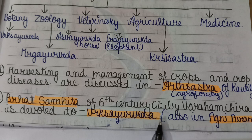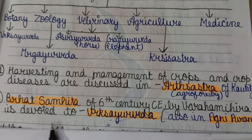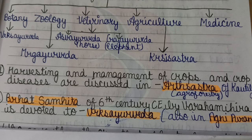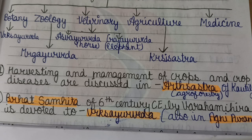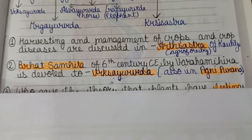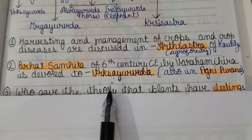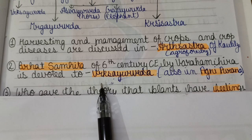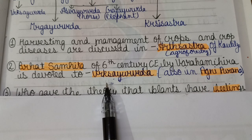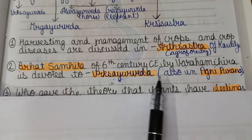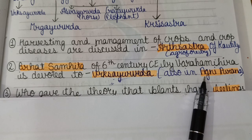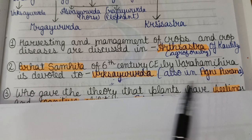The Brihat Samhita of the 6th century CE by Varahamihira is devoted to Vriksha Ayurveda. It is also discussed in the Agni Purana.